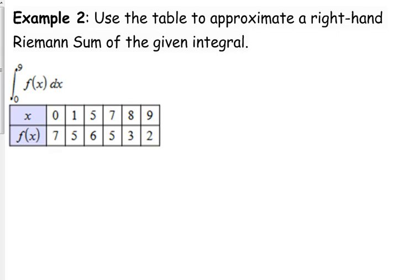So, between 9 and 8, we use the right side of the interval, so it's 2, width of 1. Between 8 and 7, use the right side, 3 times width of the interval is 1. Between 7 and 5, bless you, use the right side, width of 2. Between 5 and 1, use the right side, 6, width of 4. Between 1 and 0, use the right side, 5, width of 1.